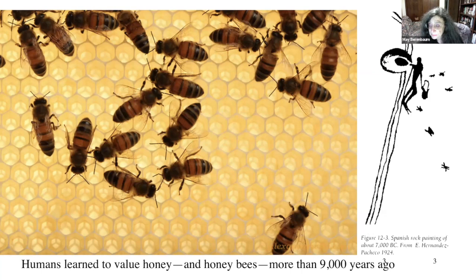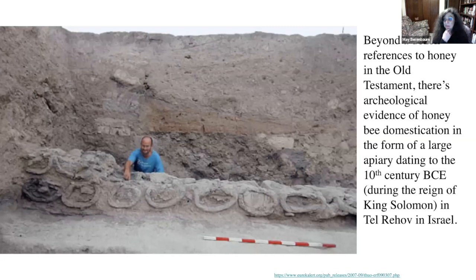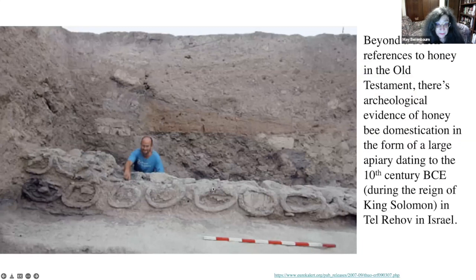The ancient rock honey hunters depicted in the Cave of the Spiders — Spanish rock paintings from about 7,000 BC — found honey so valuable that they would brave the defensive reactions of swarms of bees to collect it. Beyond a dozen references to honey in the Old Testament, there is actual archaeological evidence of honeybee domestication: a large apiary dated to the 10th century BCE during the reign of King Solomon at Tel Rehov in Israel, with an estimated hundred clay hives producing hundreds of pounds of honey.